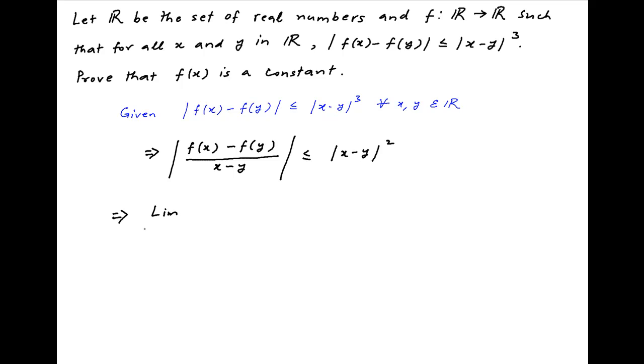Now take the limit of both sides as x tends to y. The left-hand side is the limit as x tends to y of modulus of f(x) minus f(y) upon x minus y, and this is less than or equal to the limit as x tends to y of modulus of x minus y whole square.